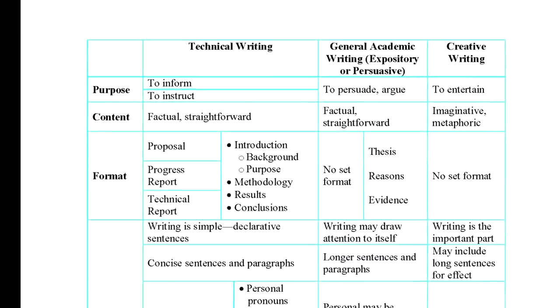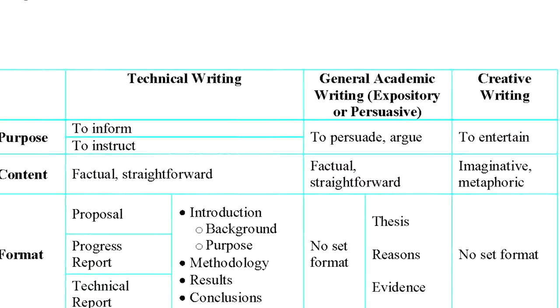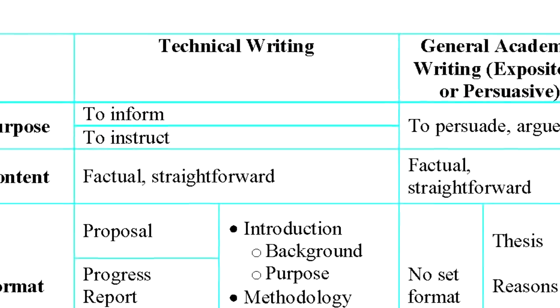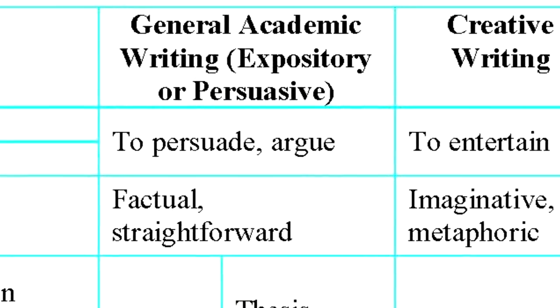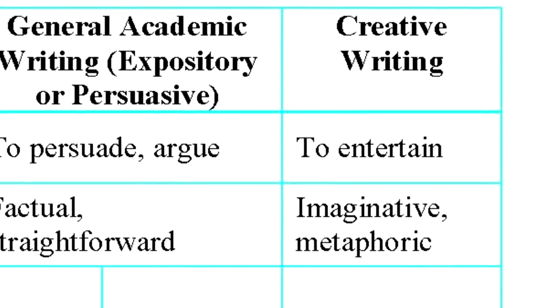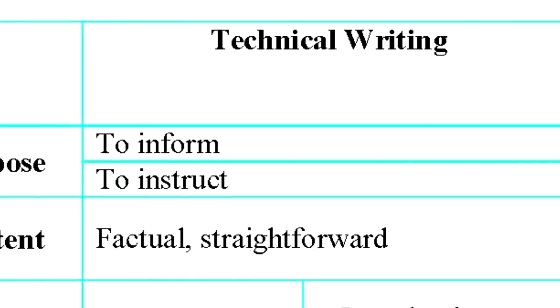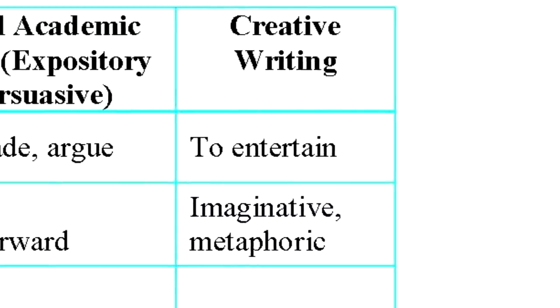So we can pull out a few ways that engineering writing is different from this other kind of literary writing. So here is a table that lists some of the differences between technical writing or engineering writing or science writing and general academic writing, which we can also call expository or persuasive writing, as well as creative writing. Now, I've tried to delineate some of the differences between these three. The purpose of technical writing is usually to inform or instruct, while general academic writing wants to persuade or argue. While creative writing is generally there to entertain, and those purposes determine the content, format, and style. For example, if what you want to do is inform or instruct, then you want to be very factual and straightforward in your content. While in creative writing, because you want to entertain, then the language itself, the content is imaginative or metaphoric, which helps to entertain you because it's interesting metaphors, interesting relationships that is entertaining.